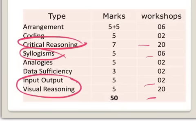Critical reasoning, syllogisms, input output, and visual — these are the four areas out of the total paper which you have to seriously work on. That's why we have more workshops on these areas. I'm not saying others are not important, but these are the main areas which normally people score less in. If it's an easy question, everyone can solve it. But if it's a tough question and you are able to solve that, then you are a champion — because the problem is you have to beat the competition.